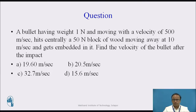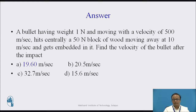You are supposed to pause the video and answer this question. The question is: a bullet having weight 1 Newton moving with a velocity of 500 meters per second hits centrally a 50 Newton block of wood moving away at 10 meters per second and gets embedded in it. Find the velocity of the bullet after impact. Using the law of conservation of momentum — initial momentum equals final momentum — and substituting the given velocities, the final common velocity after impact is obtained as 19.60 meters per second.